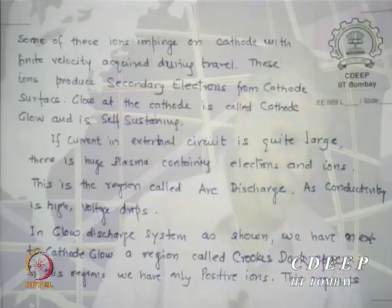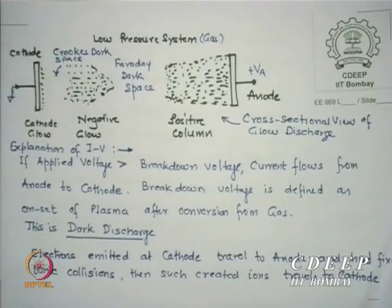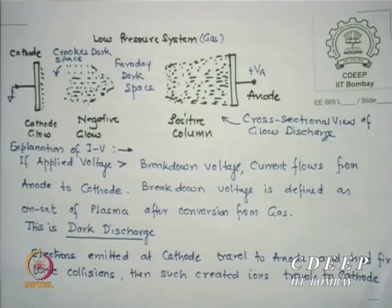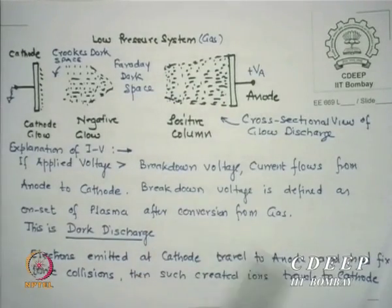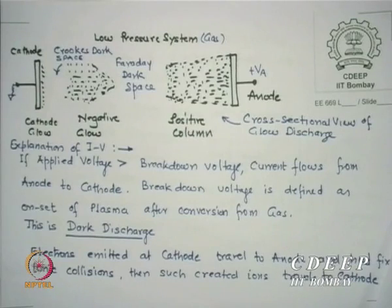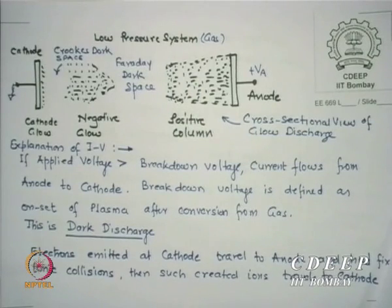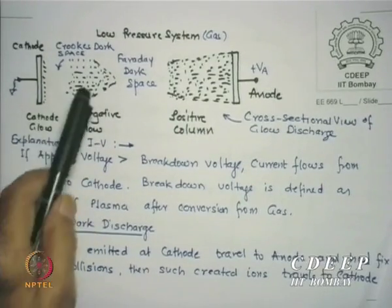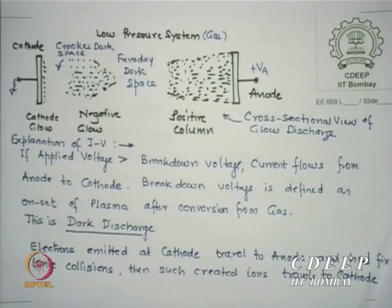In a glow discharge system with a low-pressure gas in a chamber — which could be a tube or any evacuated system — I have a cathode and an anode with a positive voltage applied. Electrons start coming from the cathode. Some ions strike the cathode and create a thin glow called cathode glow. However, there is a region between the cathode glow and the main glow region where there are no collisions. This is called Crookes dark space.